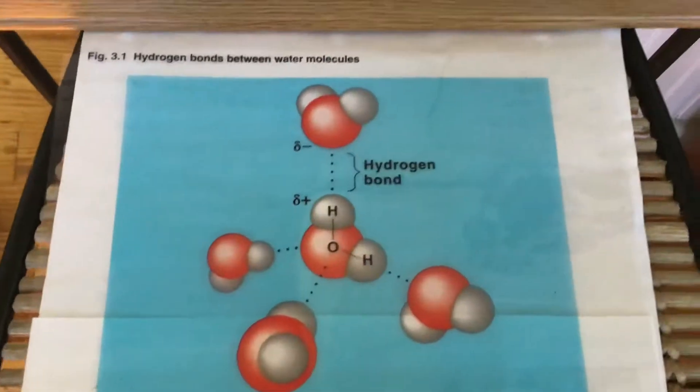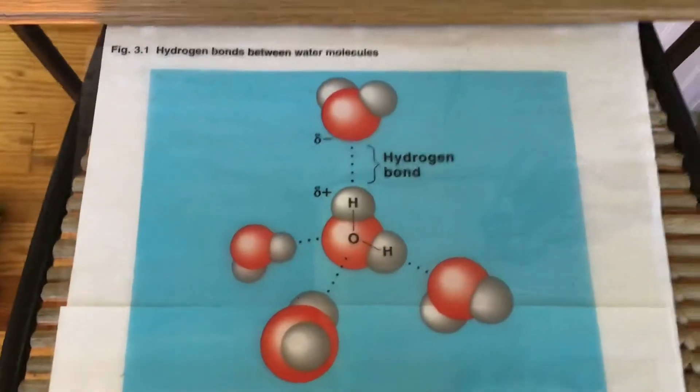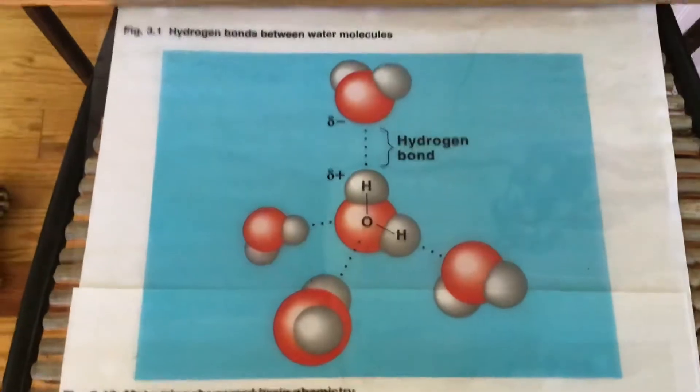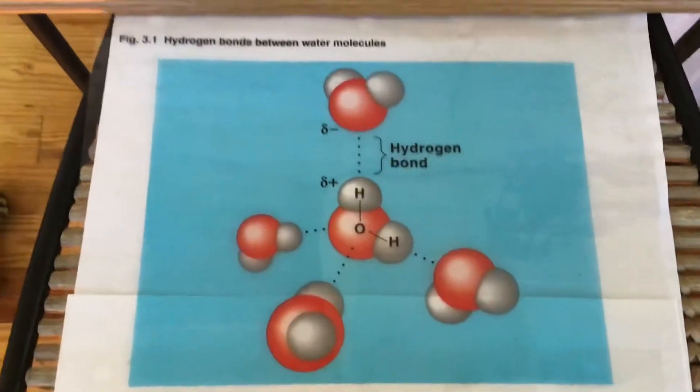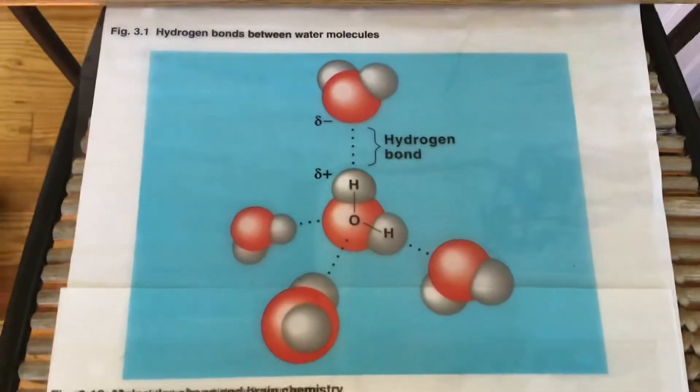All right, before we transition into some other subjects, I want to finish up some chemical ideas. We've been talking about the different kinds of bonding: ionic bonding, for example, or covalent.